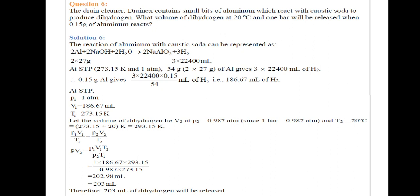Now we know P1V1/T1 equals P2V2/T2. So we will calculate V2 equals P1V1T2/P2T1. V2 equals 1 times 186.67 times 293.15 divided by 0.987 times 273.15. Value equals 203 ml. Therefore, 203 ml of dihydrogen will be released.